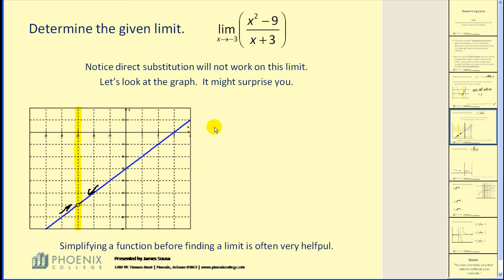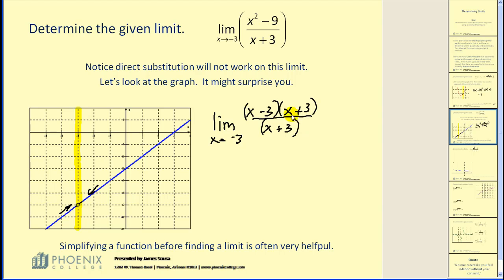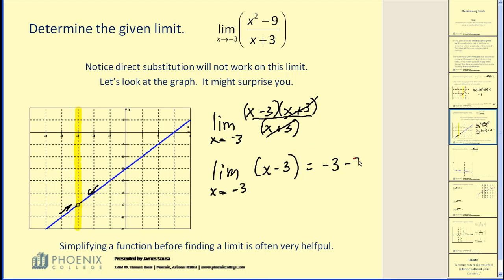However, if we simplify this function first, x squared minus 9 is a difference of squares. What we'll find is that there's a common factor of x plus 3 in the numerator and denominator. If we simplify this out, we're left with a limit as x approaches negative 3 of x minus 3, which we can now just perform direct substitution. We'd have negative 3 minus 3, which is equal to negative 6.